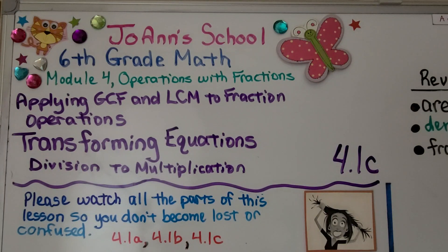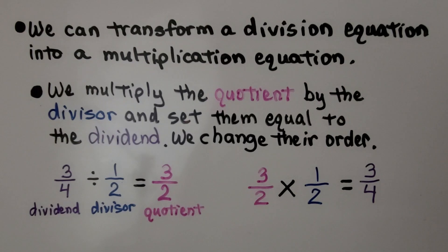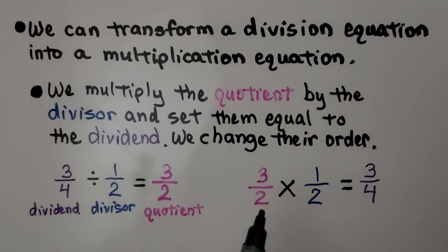This is the last part of 4.1. We're at 4.1c and we're going to talk about transforming equations, division to multiplication. We can transform a division equation into a multiplication equation. We multiply the quotient by the divisor and set them equal to the dividend.